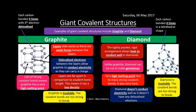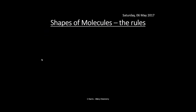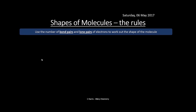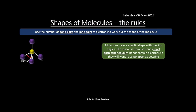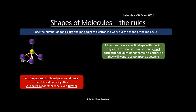The shapes of molecules can be determined using the number of bond pairs and lone pairs of electrons. Molecules have a very specific shape because the bonds repel each other equally and try to get as far away from each other as possible — electrons are like charges and will repel. A lone pair next to a bond pair repels more than two bond pairs together, and two lone pairs repel even further, changing the bond angles.